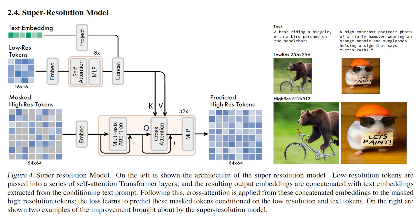In the super-resolution model, low-resolution tokens are passed into a series of self-attention transformer layers, and the resulting output embeddings are concatenated with text embeddings extracted from the conditioning text prompt.